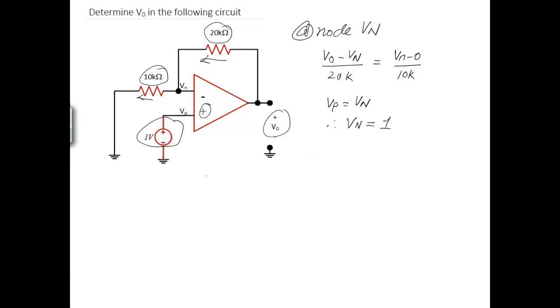What we get here is V0 minus 1 over 20K. That should be equal to 1 over 10K. So simplifying this we get V0 over 20K which should be equal to 1 over 20K plus 1 over 10K.